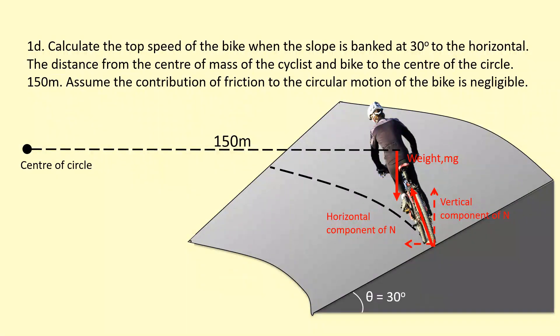We're asked to calculate the top speed of the bike when the slope is banked at 30 degrees to the horizontal. The distance from the center of mass of the cyclist and bike to the center of the circle is 150 meters. Assume the contribution of friction to the circular motion of the bike is negligible.